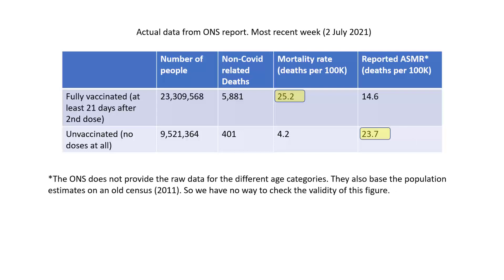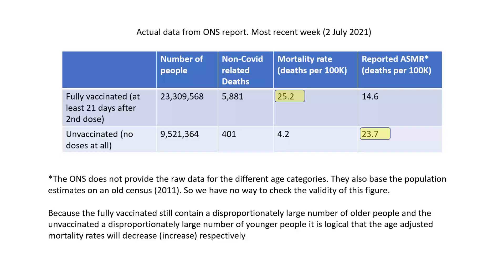There is a problem here: the ONS doesn't provide the raw data for the different age categories, so there's no way to check the validity of these figures. We do know the proportions used are based on population estimates from an old census — namely the 2011 census — so there are already problems with that, even if we had the raw data. Because the fully vaccinated still contain a disproportionately large number of older people and the unvaccinated a disproportionately large number of younger people, it is logical that the age-adjusted mortality rates will decrease and increase respectively.